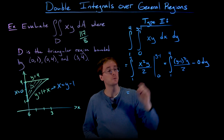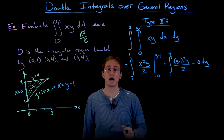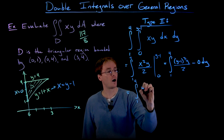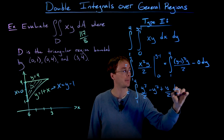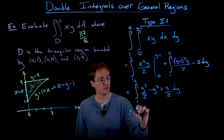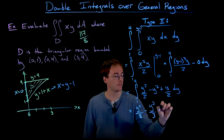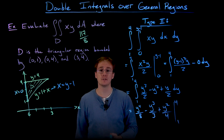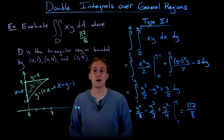Before integrating with respect to y, we expand and simplify. (y minus 1) squared equals y squared minus 2y plus 1. Multiplying by y and dividing by 2 gives: y cubed over 2 minus y squared plus y over 2. Using the power rule, the antiderivative is y to the 4th over 8 minus y cubed over 3 plus y squared over 4. We evaluate this from y equals 1 to y equals 4.